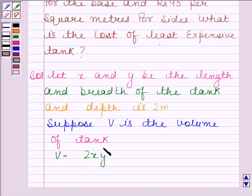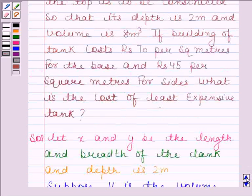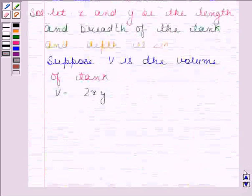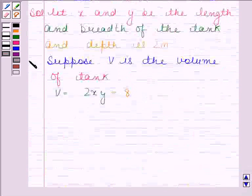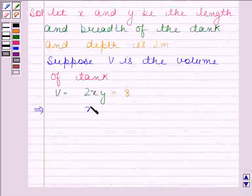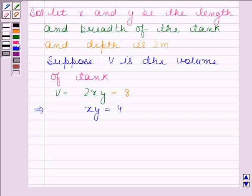Now here, length and breadth of the tank are x and y and its depth is 2. And in the question, we are given that its volume is equal to 8 meter cube. So 2xy is equal to 8. This implies xy is equal to 4. And this implies y is equal to 4 by x.